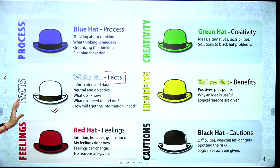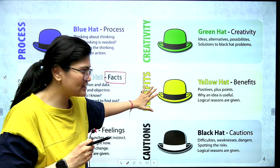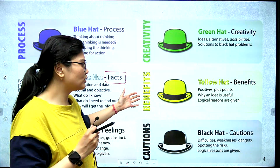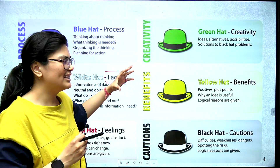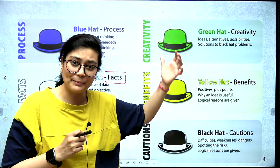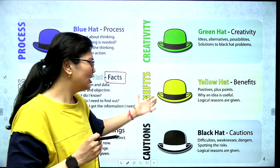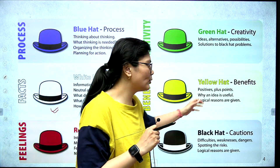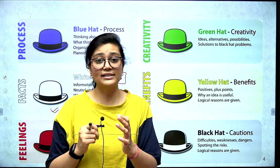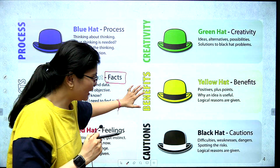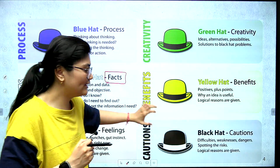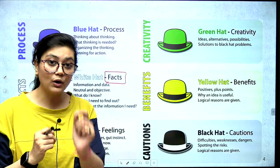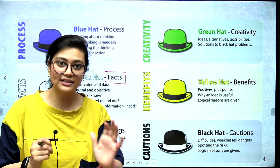After that, we come to the yellow hat — we think about what are the plus points. We can map the logical reasons. So the yellow hat is the sunshine hat, which represents plus points, pros, and benefits. After that, we look at the negative points — the black hat, which is the caution, the danger symbol. Black hat represents caution.